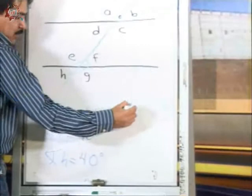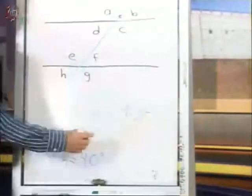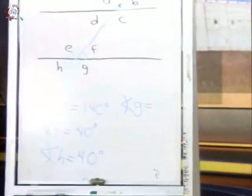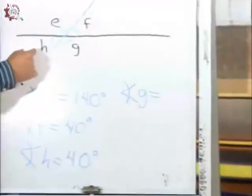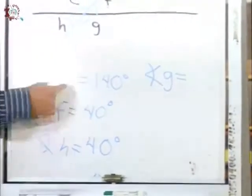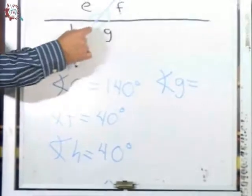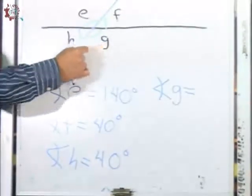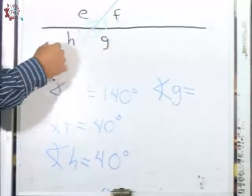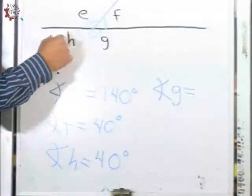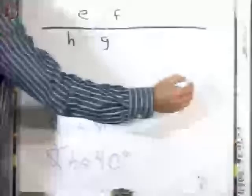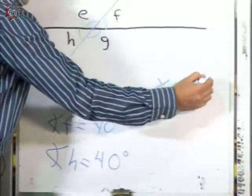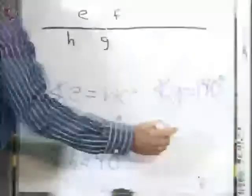¿Cuánto medirá el ángulo G? Si sabemos que el ángulo H mide 40, H y G son suplementarios, es decir que la diferencia de 180 y 40 nos da los 140 grados.